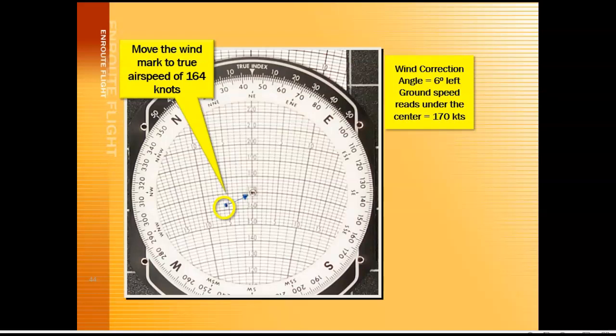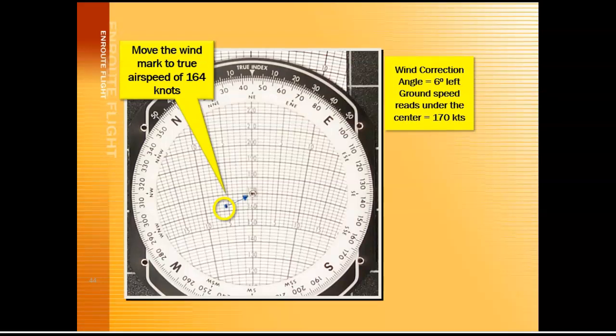Remember, if the wind dot ended up on the right side of the center line, we would add the wind correction angle — so that would be plus 6 instead of minus 6. Then we take the wind correction angle and add it or subtract it from our true course. In this case, we take our wind correction angle of minus 6 degrees and subtract that from our true course of 45 degrees to get our true heading of 39 degrees.